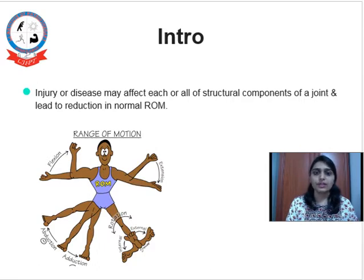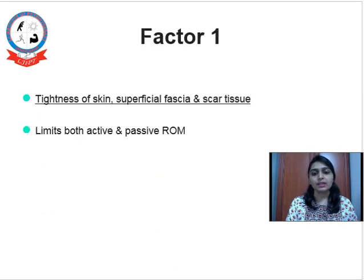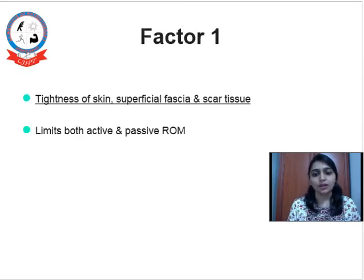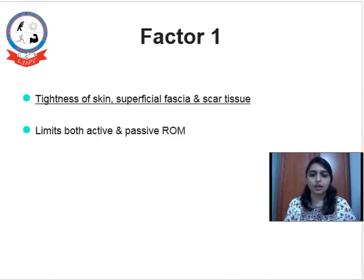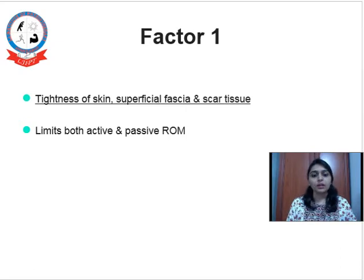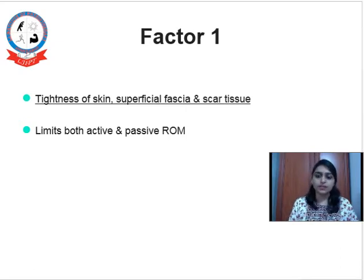Today we are going to see in detail about each and every factor with its examples. To make it simple, I have given each a name like Factor 1. Factor 1 is tightness of skin, superficial fascia and scar tissue. It limits both active as well as passive range of motion.